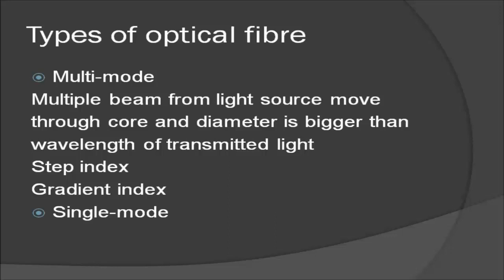The second type is the multimode graded index fiber, which decreases the distortion of the signal through the cable. In the graded index fiber, there is a varying density — density is highest at the center of the core and decreases gradually to its lowest at the edge.